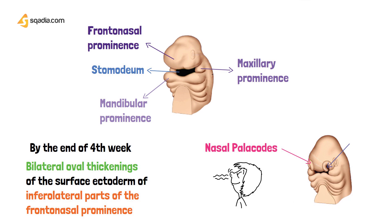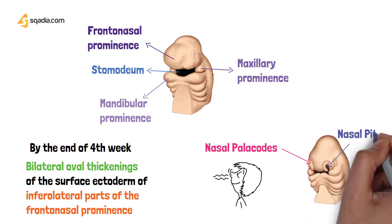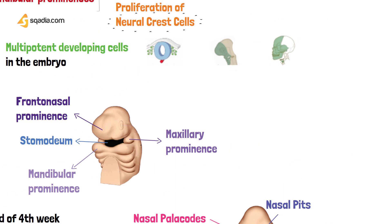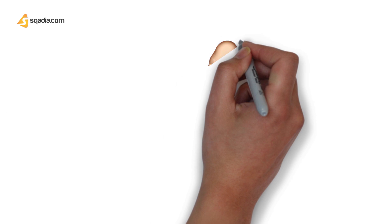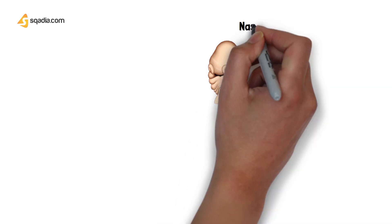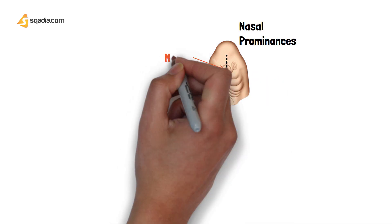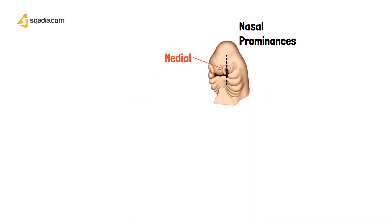The ectoderm invaginates to form the nasal pit. Next, the nasal prominences are further divided into two parts: the medial nasal prominence and the lateral nasal prominence.